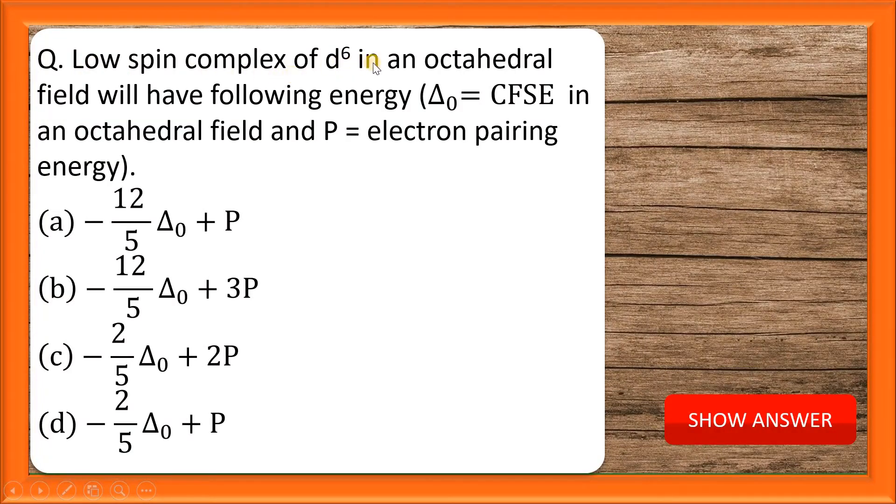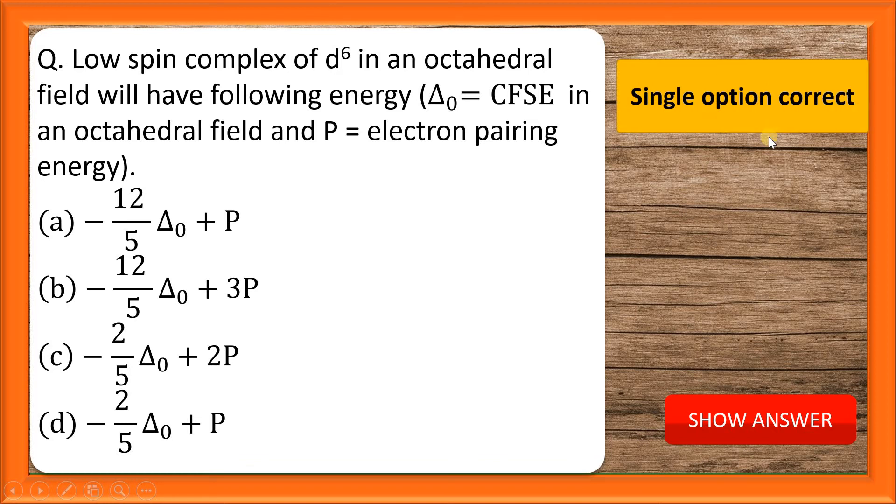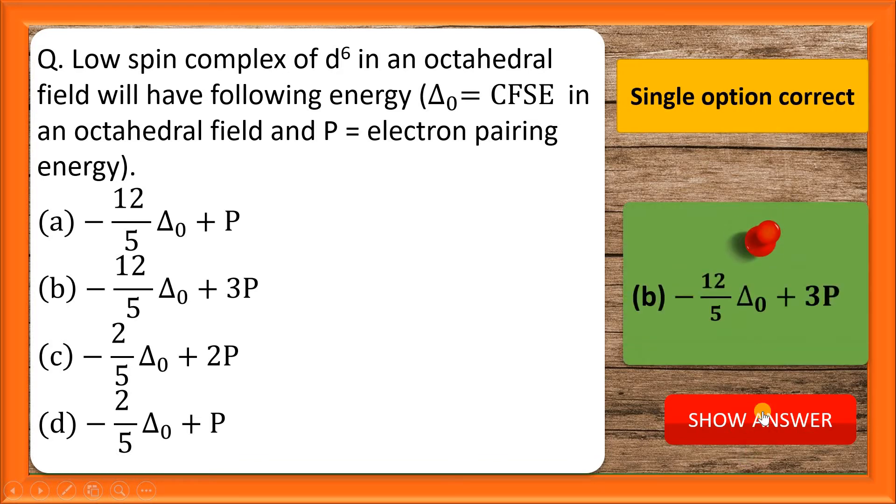Low spin complex of d6 in an octahedral field will have the following energy. Delta naught is the CFSE in an octahedral field and P is the electron pairing energy. These are the options students. This is a single option correct category and the answer is option number B.